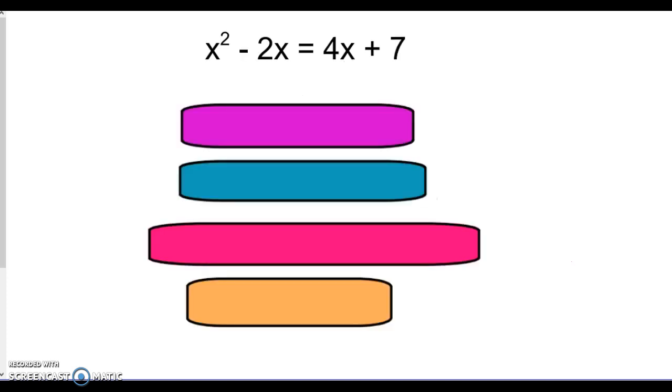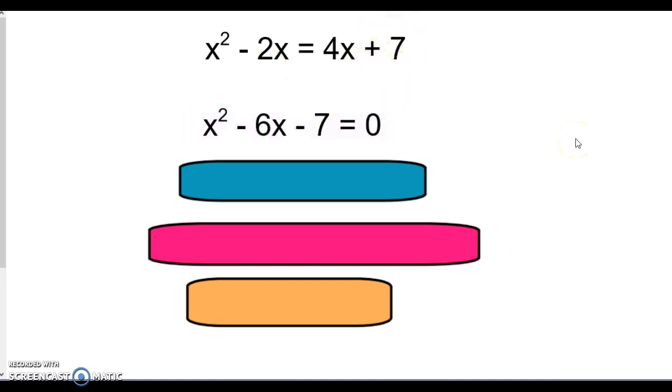All right, one final equation. Step one is to set it equal to zero. So we are going to have to subtract 4x—this 4x here is going to have to move to the left, and same thing with that seven. So this would be our new equation: everything moves to the left, we are now equal to zero.